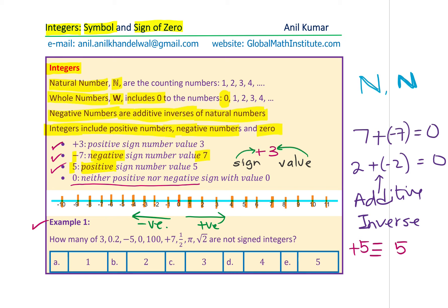Let's take up Example 1. The question is: how many of 3, 0.2, minus 5, 0, 100, plus 7, half, pi, square root 2 are NOT signed integers? Options are 1 to 5. We are looking for numbers that are either not signed or not integers. Even numbers which are not integers will be included in our list.